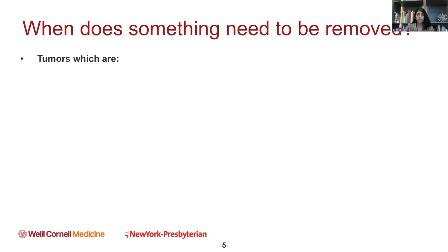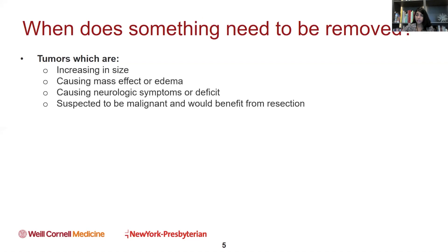We're going to focus on cortical tumors — cortical anatomy, cortical tumors, and cortical lesions. When do we need to take something out? Tumors that are increasing in size, creating mass effect, or creating swelling in the brain (edema), causing new neurologic symptoms or a neurologic deficit, or any tumor we would expect to be malignant that would benefit from resection.